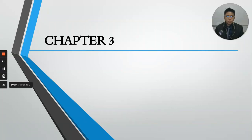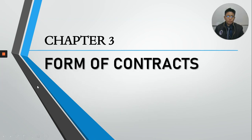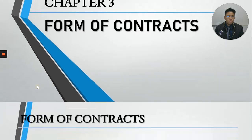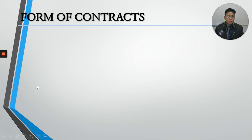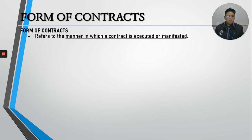Good evening class. Tonight we will be continuing with our lecture on the law on contracts. We will be discussing Chapter 3, which refers to the form of contracts. Form is not a new concept — we have already studied this when we discussed Chapter 1, the general provisions of the law on obligations. Form refers to the manner in which a contract is executed or manifested.